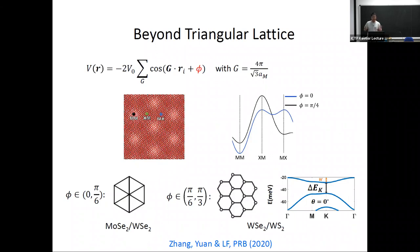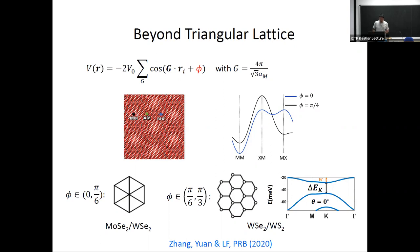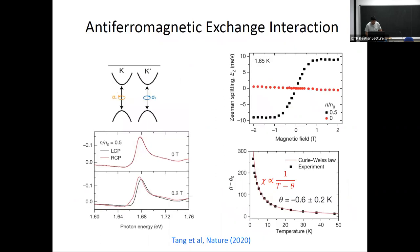So far everything seems well understood from the point of view of a triangular lattice Hubbard model. But from more than two years ago we realized the system can be even more interesting — and that's because there's a spin-valley locking in the TMDs.